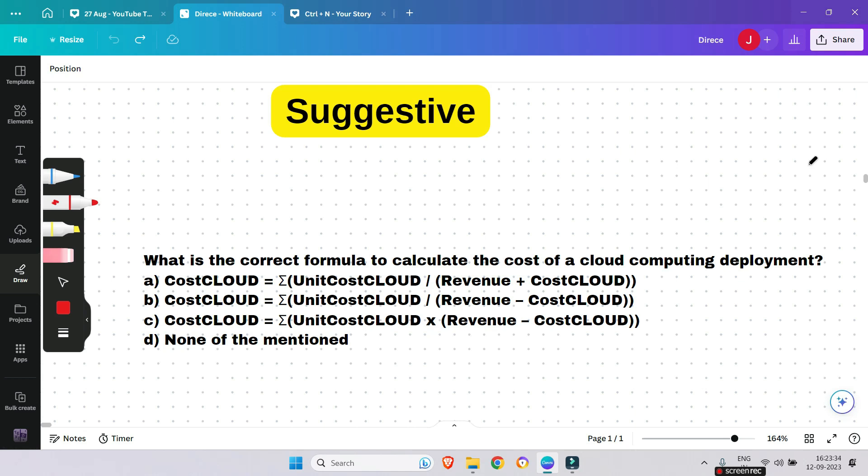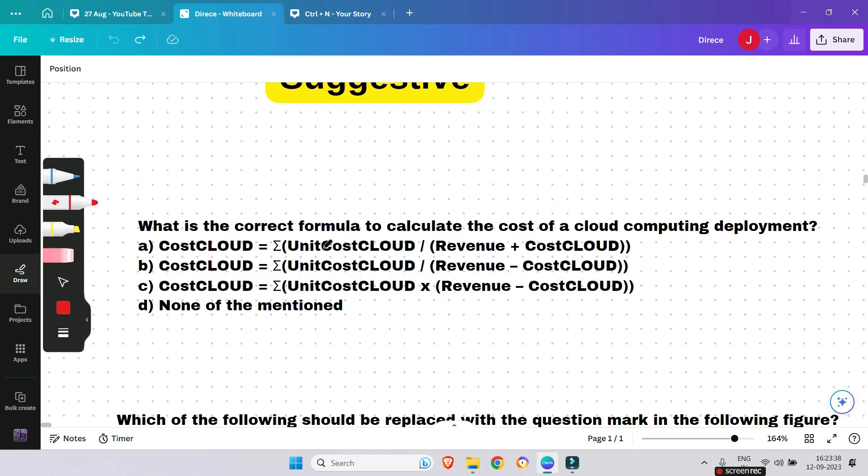Okay, let me answer that. CostCLOUD equals summation of UnitCostCLOUD divided by Revenue minus CostCLOUD. Actually, unit cost is defined as the cost of a machine instance per hour or another resource.